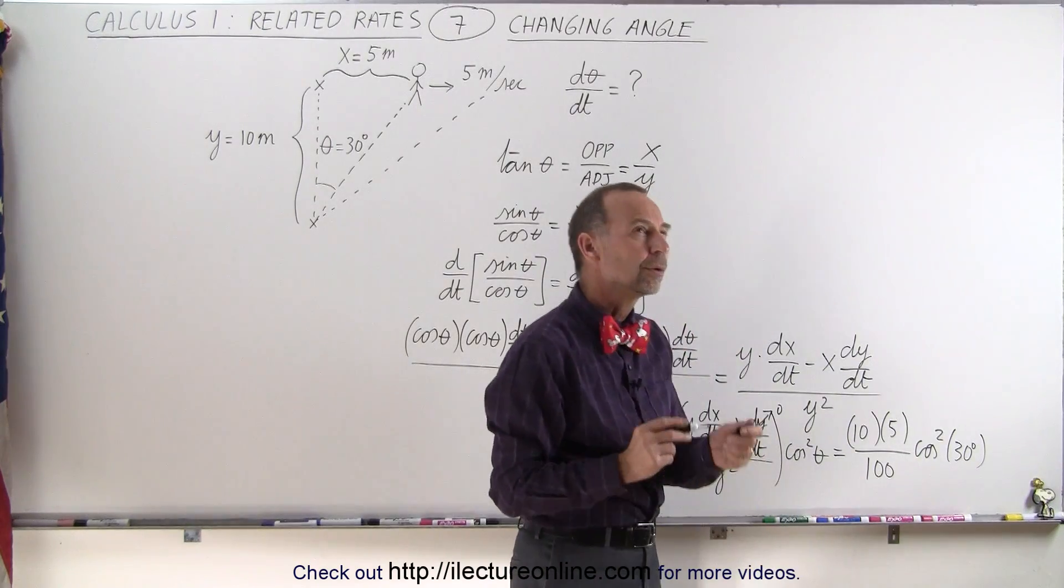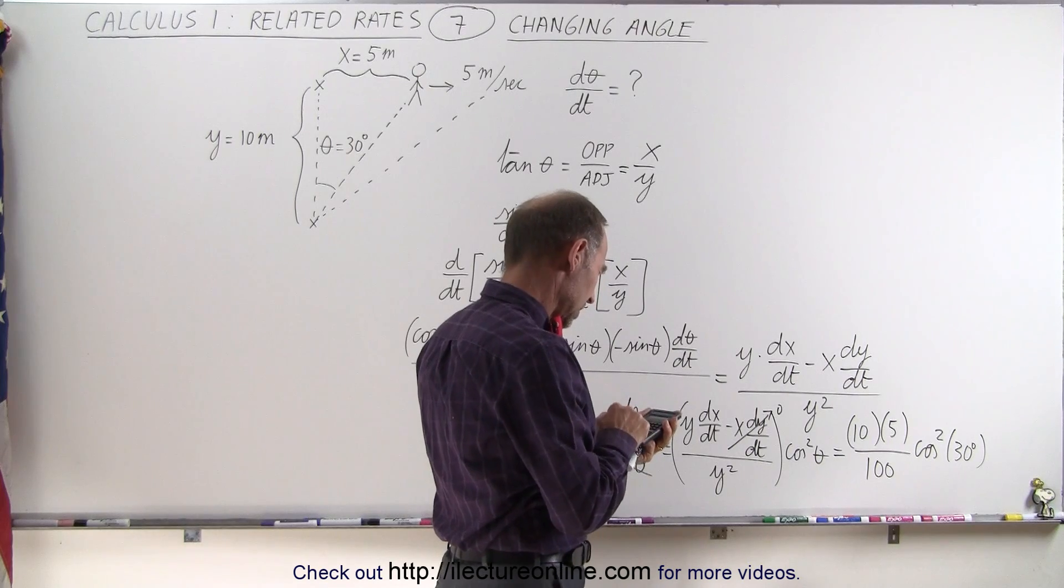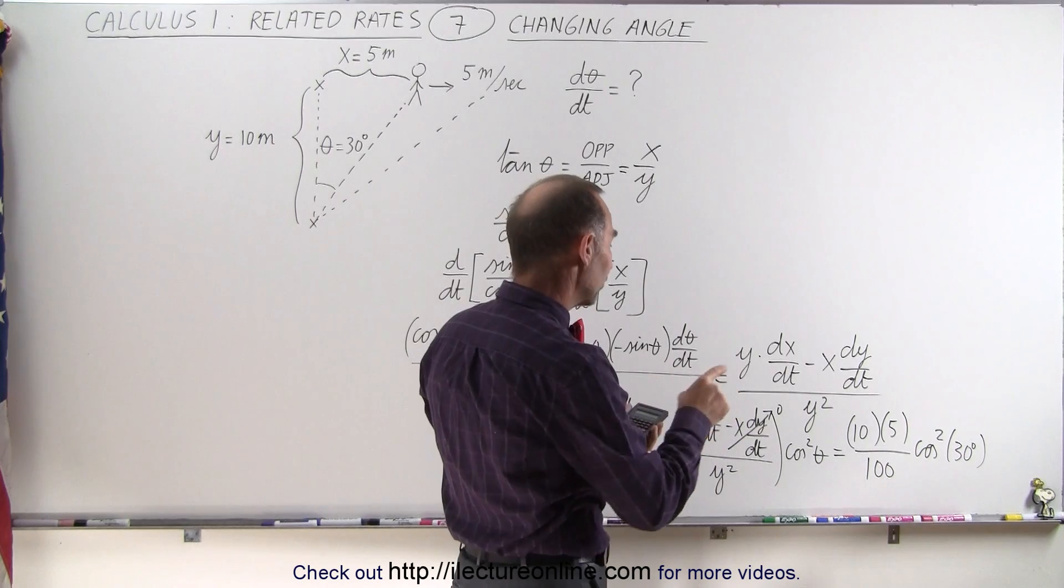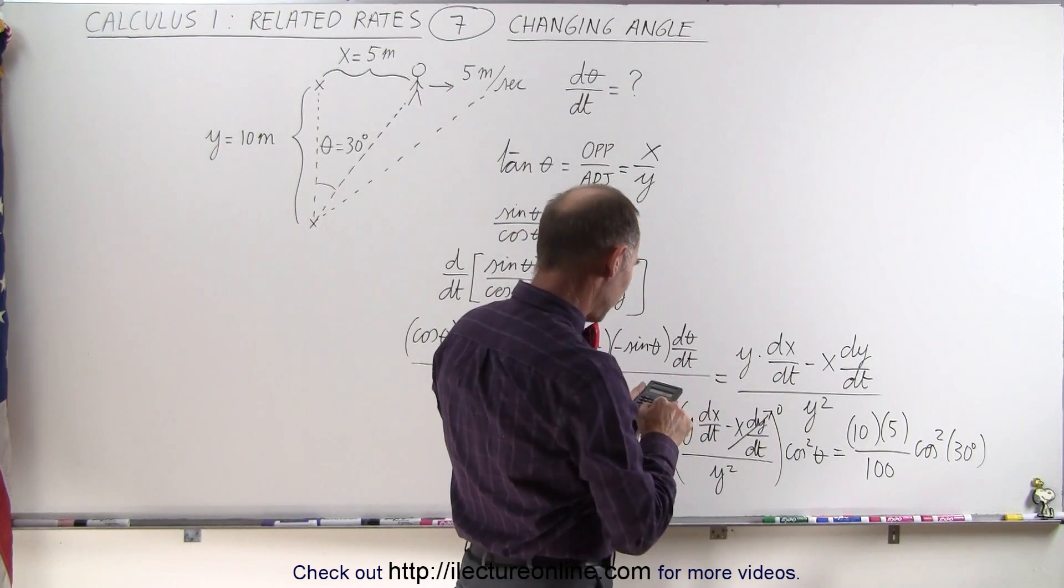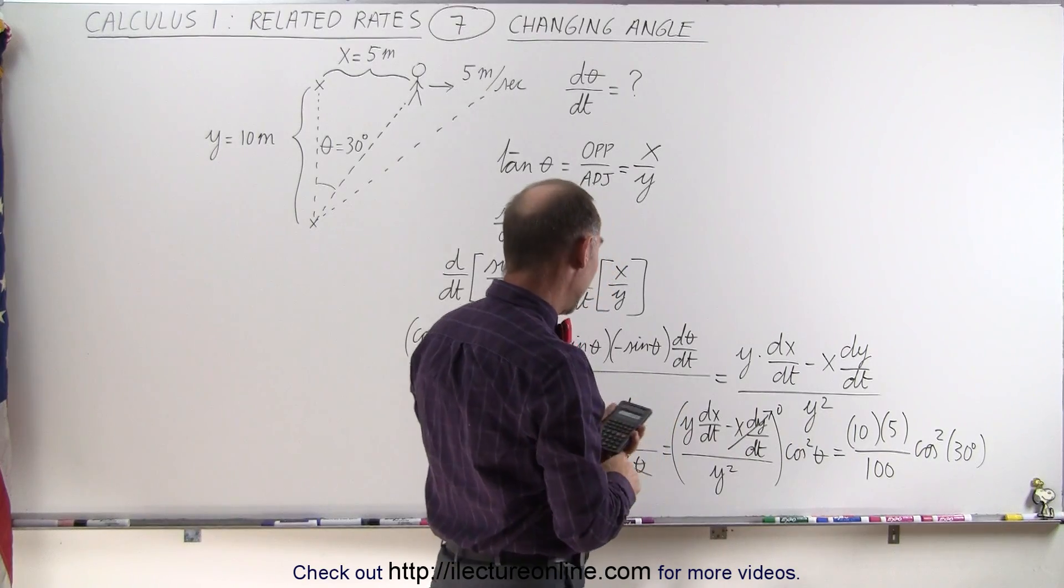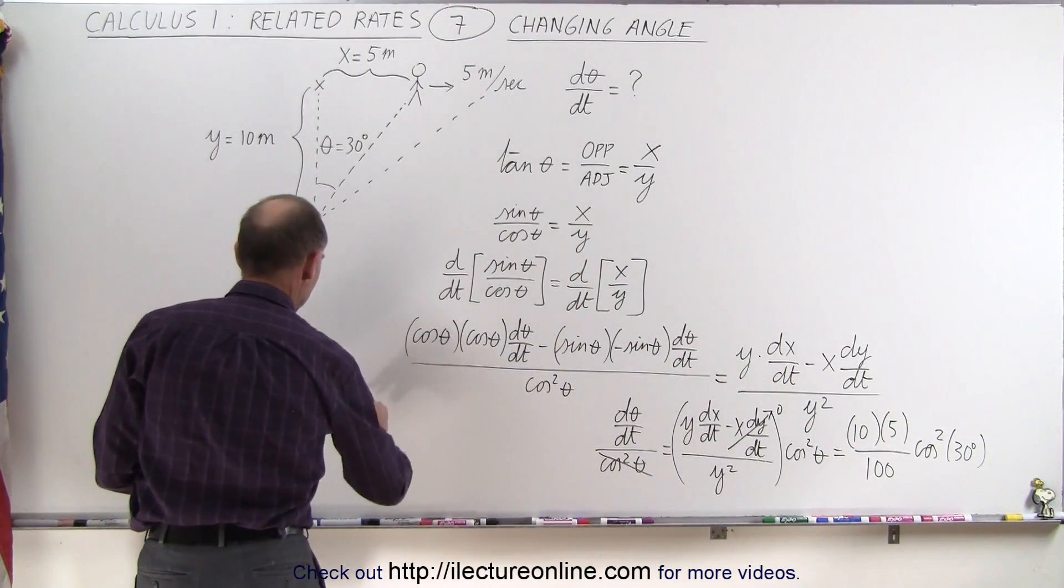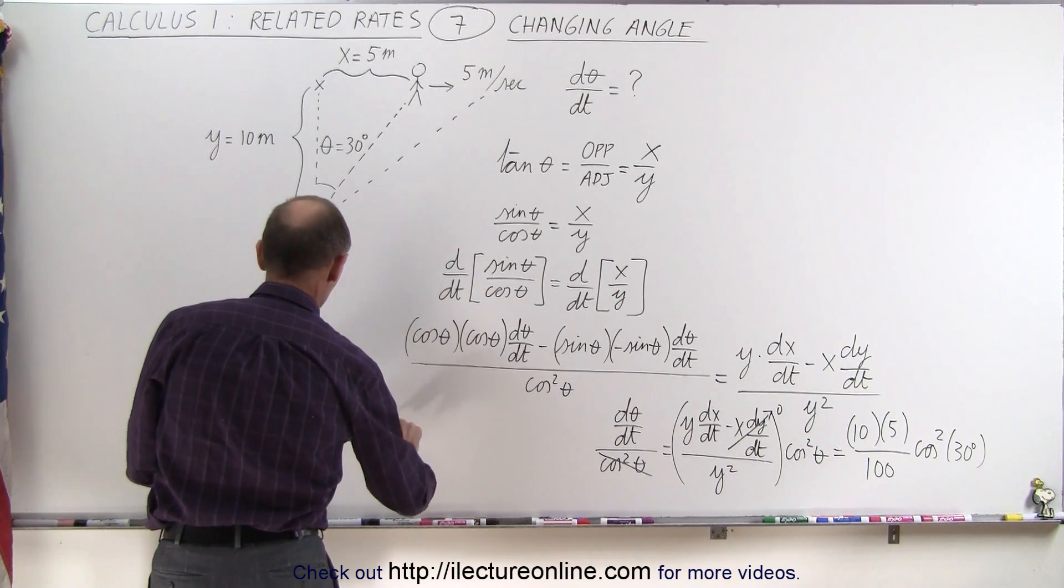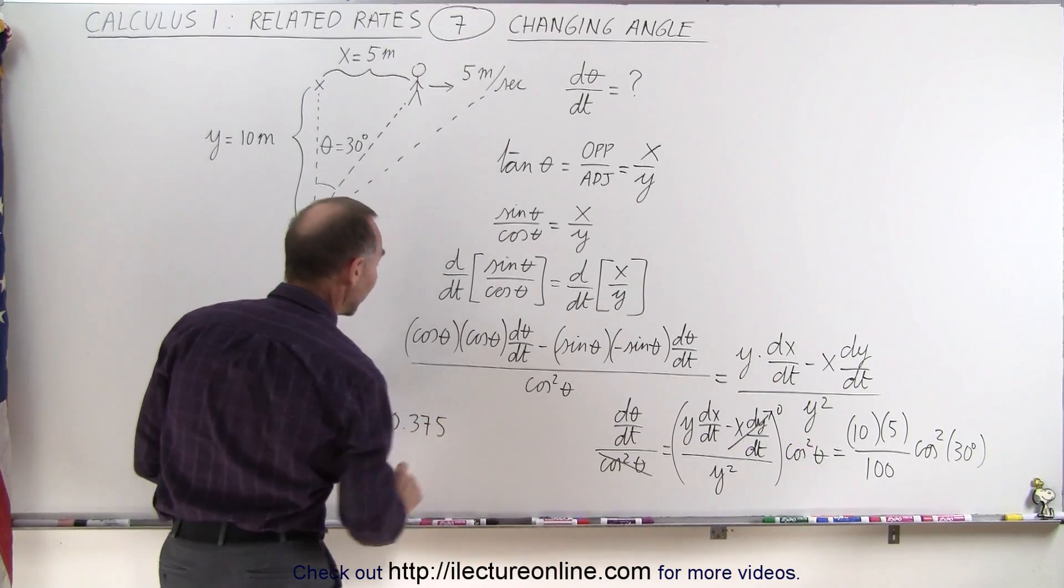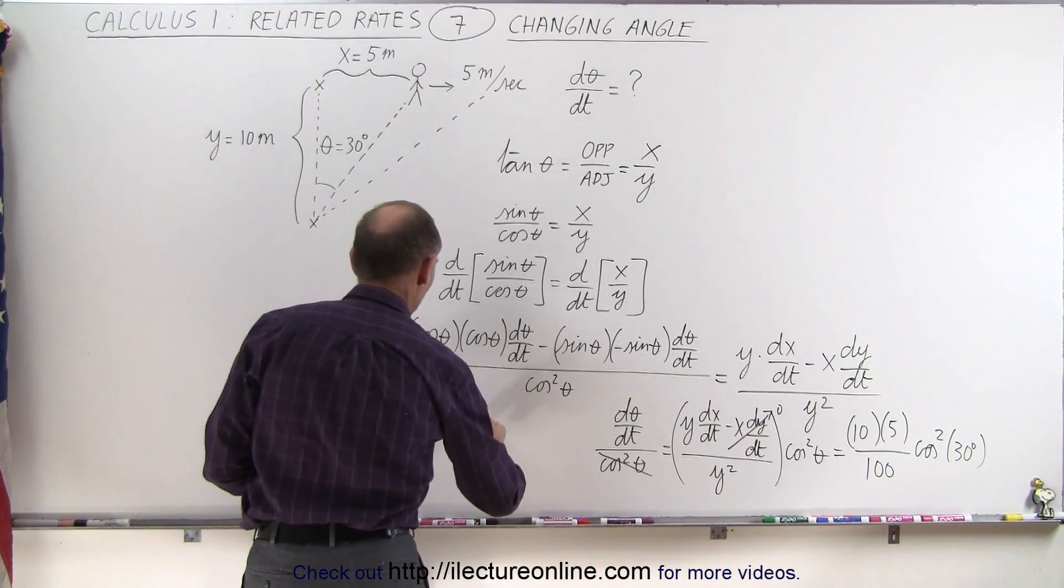Now the cosine of 30 degrees is 0.866, let's see here. 30, take the cosine, if you square that, you get 0.75. So 0.75 times 50, divided by 100, equals, and since I'm out of room, I'll move over here, the d theta dt is equal to 0.375, and of course the units would be radians per second.